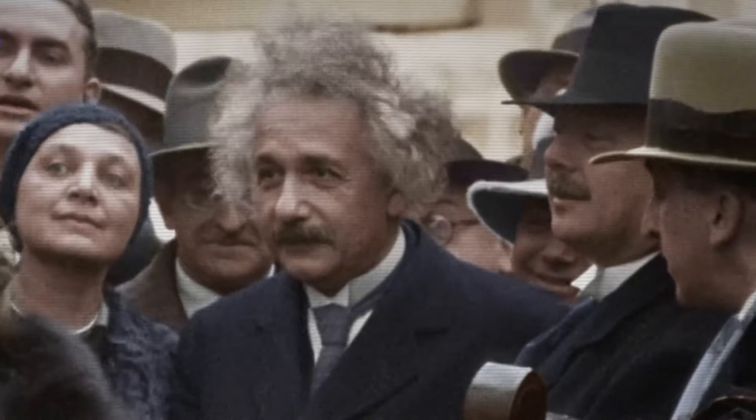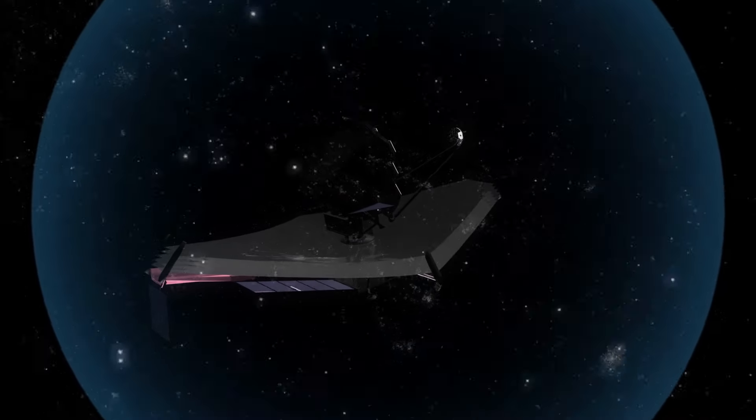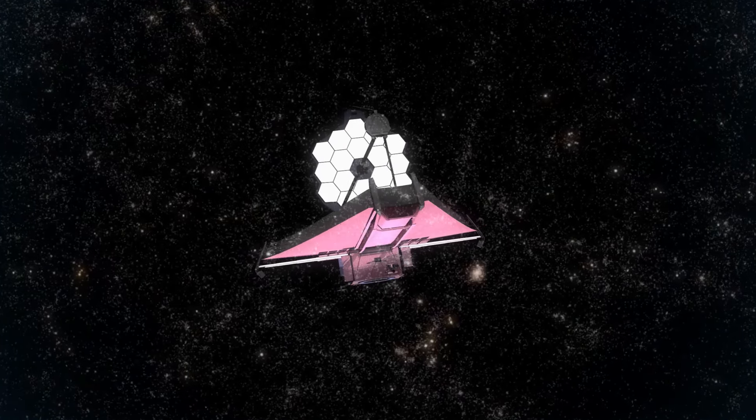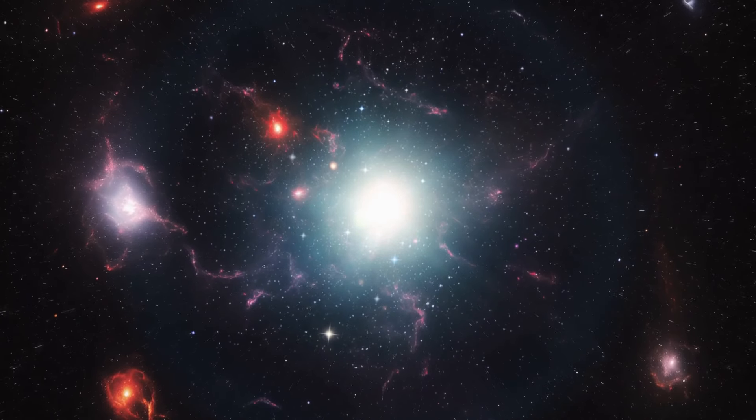Was Albert Einstein right when he predicted that we would never be able to see to the edge of the universe? The James Webb Space Telescope, JWST, has recently observed a strange void in the extremely early universe that could confirm this prediction.